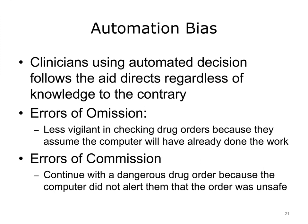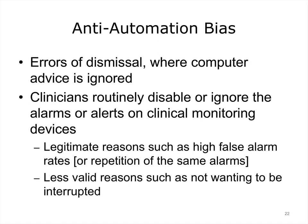Earlier in the lecture, we were introduced to decision biases. Biases reflect systematic deviations from normative standards and lead to skewed or imbalanced decisions. An automation bias is a preference to lean on technology — in this case, following the directions of a decision support system even if those directions do not correspond with one's intuition or training. This can lead to two classes of errors: (1) errors of omission, as in the case where a clinician is less vigilant in checking drug orders because they assume the computer will already have done the work, and (2) errors of commission, in which clinicians tacitly assume that if they were not warned about a potentially dangerous drug order by the computer, then there is nothing to worry about. The opposite is anti-automation bias, characterized by a distrust or disdain for computer advice such as alerts and reminders, which often leads to advice being ignored.